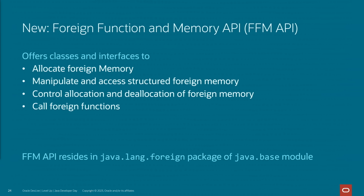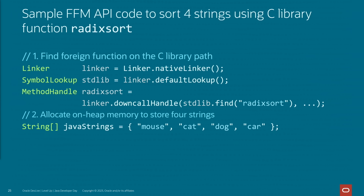The new Foreign Function and Memory API offers classes and interfaces that allow you to allocate foreign memory, manipulate and access that memory, control the timing of allocation and deallocation, and call foreign functions. Let's look at how that looks. Say we want to sort some strings and we have a C library with a function called radix sort. First, we need to get a handle for that — we use the linker and symbol lookup, and a couple lines of Java code, and we have a handle to the library.